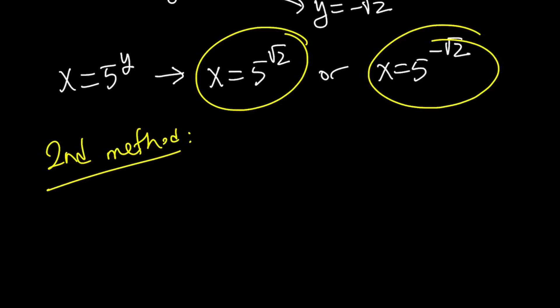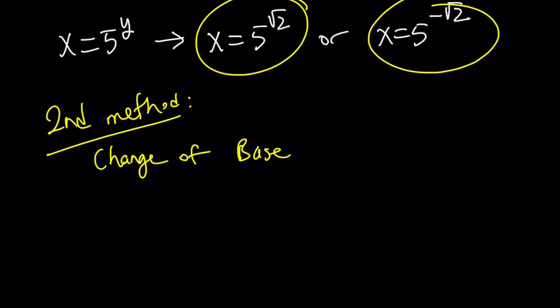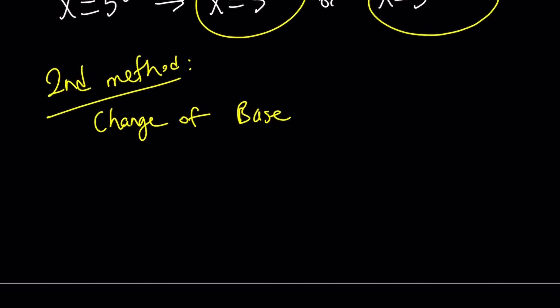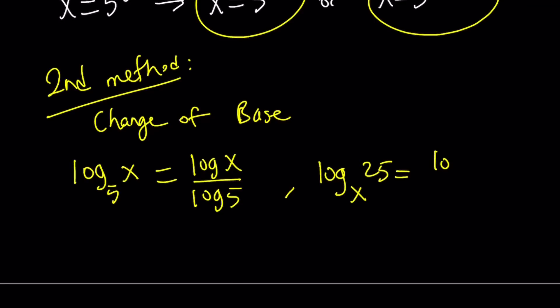For my second method, I want to do something different and use change of base. Change of base is also a very cool formula. You can basically, if you have the log of something, you can turn it into a quotient with whatever base you want. So let's go ahead and see how that works. Log x with base 5, I can write it as log x over log 5. And log 25 with base x, I can write it as log 25 over log x. So as long as you write this number at the bottom and the other at the top, you're good. That's how the formula works.